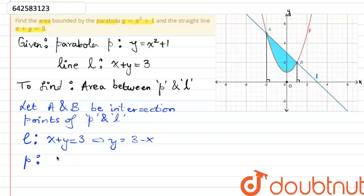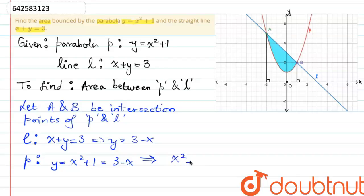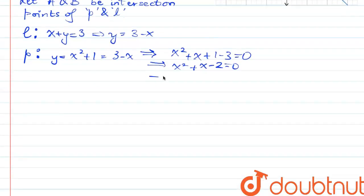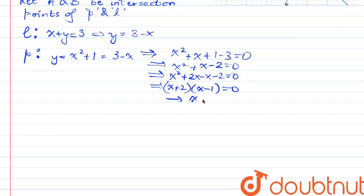According to the parabola, y is equal to x squared plus 1, which is equal to 3 minus x at the same point. This means that x squared plus x plus 1 minus 3 is equal to 0, or x squared plus x minus 2 is equal to 0. This can be factored as x plus 2 times x minus 1 is equal to 0, which means either x is equal to negative 2 or x is equal to 1.